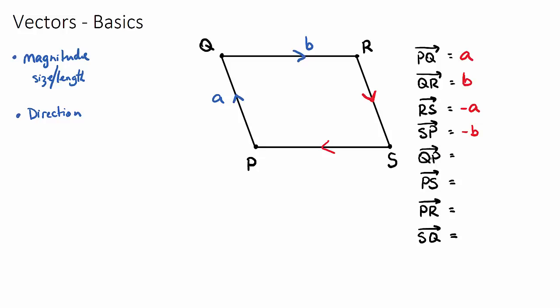S to P would be the same as vector B but in the opposite direction, so S to P is negative B. If we want to go from Q to P, this would be the same as vector A but in the opposite direction, so Q to P is negative A. If we want to go from P to S, that's the opposite of S to P. We already have S to P as negative B, so the opposite of negative B is just B. And that's because P to S is the exact same journey as Q to R, so P to S is just B.